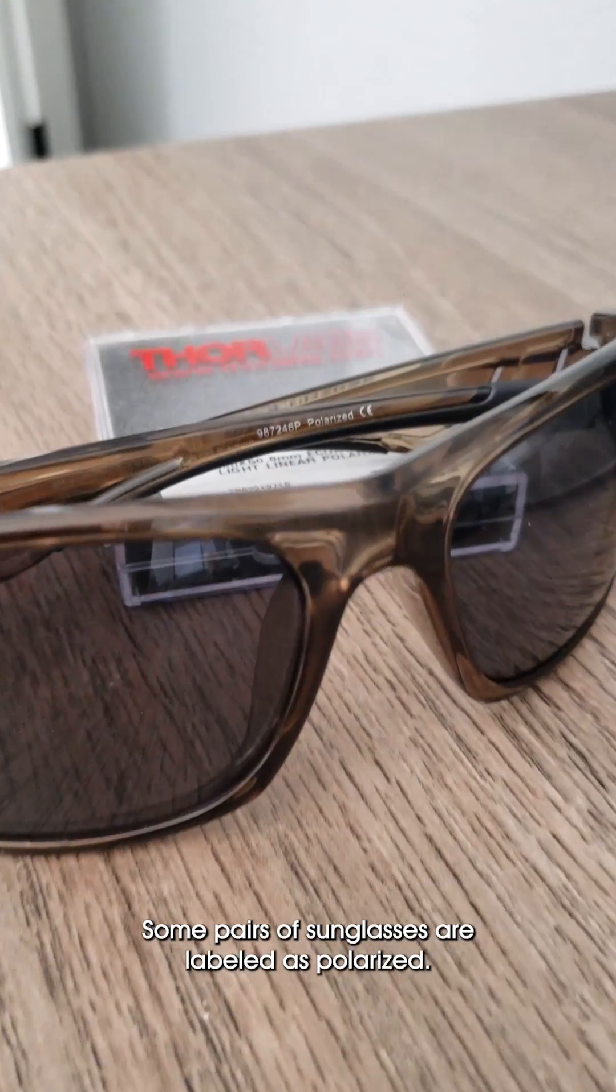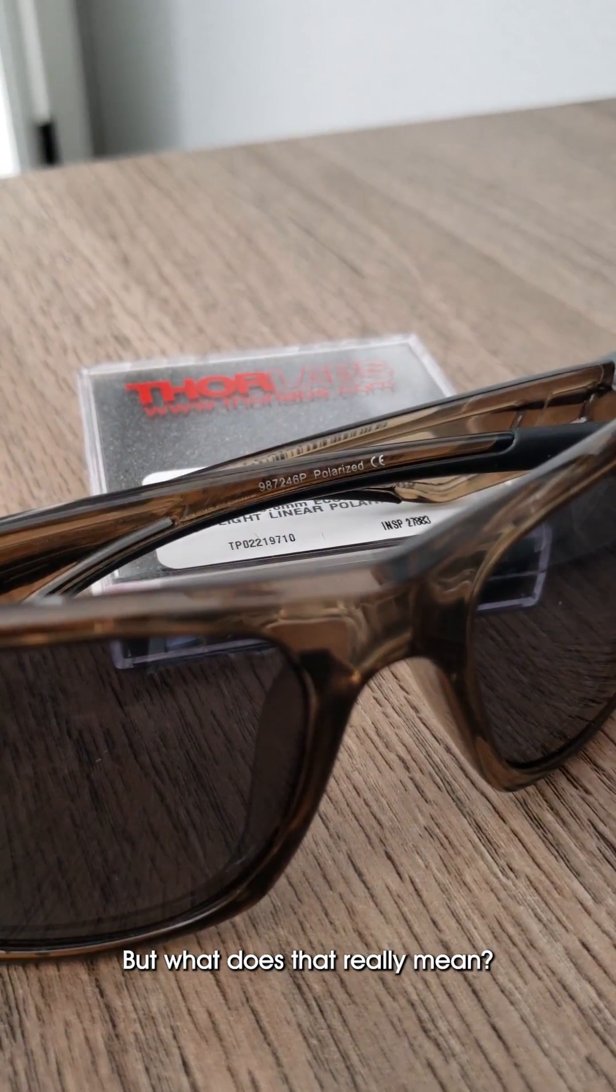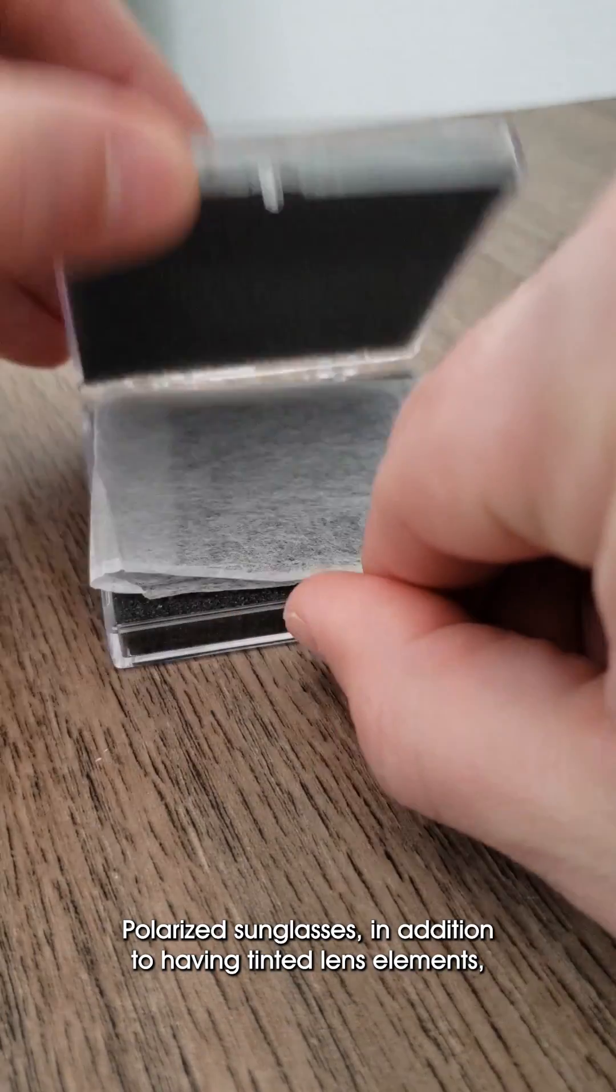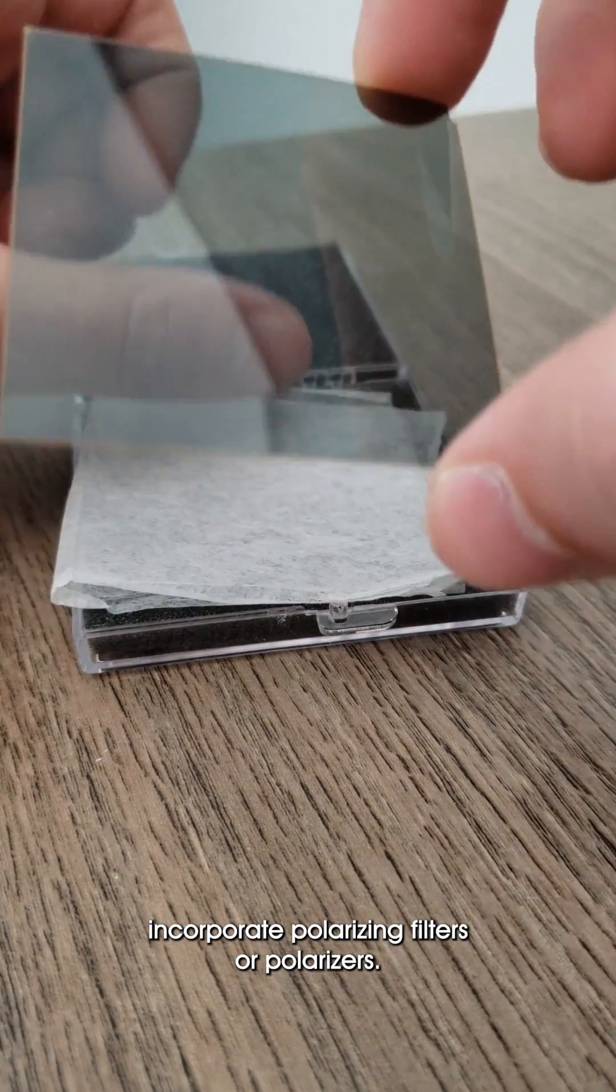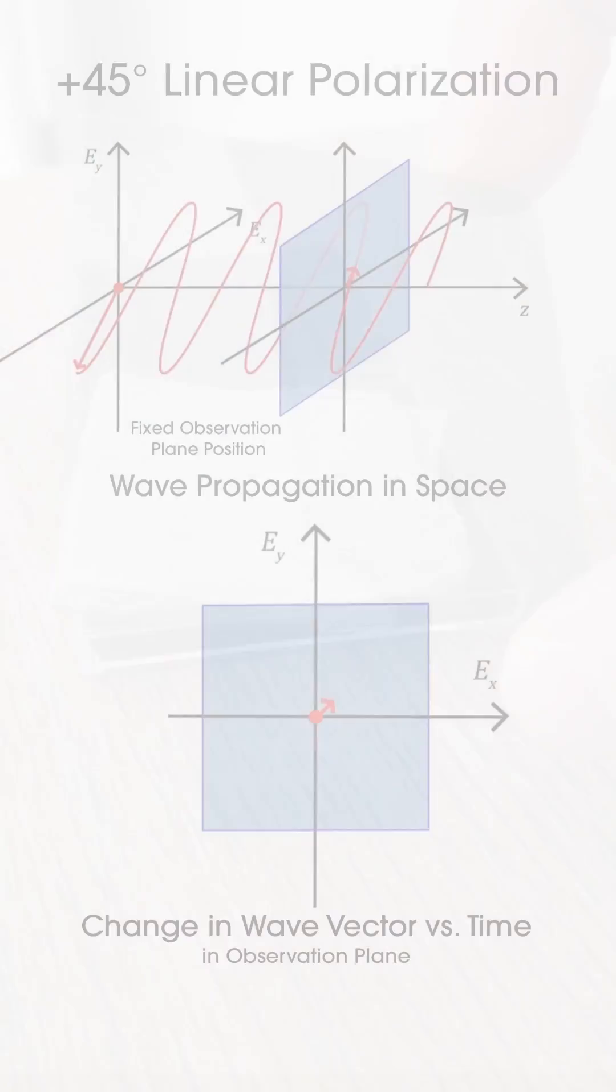Some pairs of sunglasses are labeled as polarized, but what does that really mean? Polarized sunglasses, in addition to having tinted lens elements, incorporate polarizing filters, or polarizers.